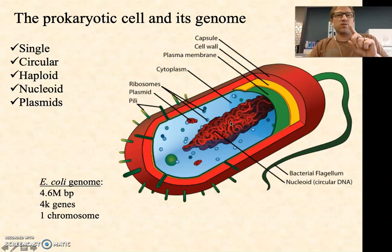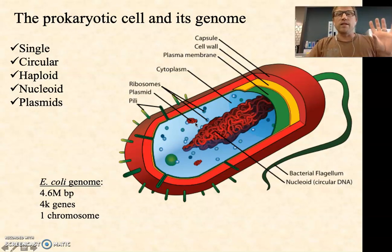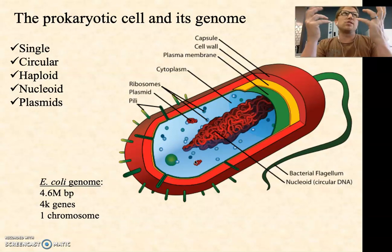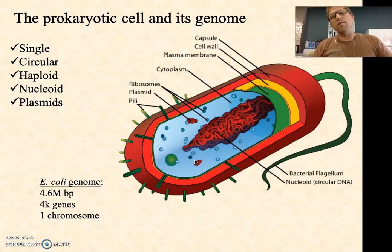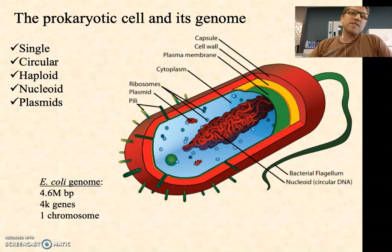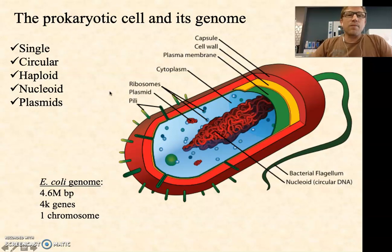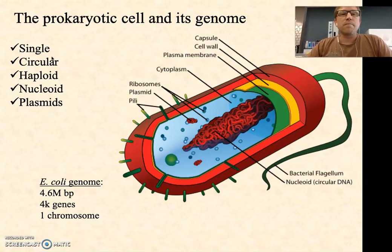In addition to the single circular haploid chromosome that prokaryotes have, many of them — and in nature it's arguable that it's most of them — carry one or more plasmids: small circular haploid pieces of DNA that carry genes for, you could think of it as, bonus information. If we cure them of their plasmid, the bacteria usually can survive under normal conditions. We don't find housekeeping or basic maintenance functions on those plasmids. It's extra things like virulence genes or antibiotic resistance genes. So the chromosome in a bacterium is single, circular, haploid, found in a nucleoid region, and then there are the plasmids that are really common.